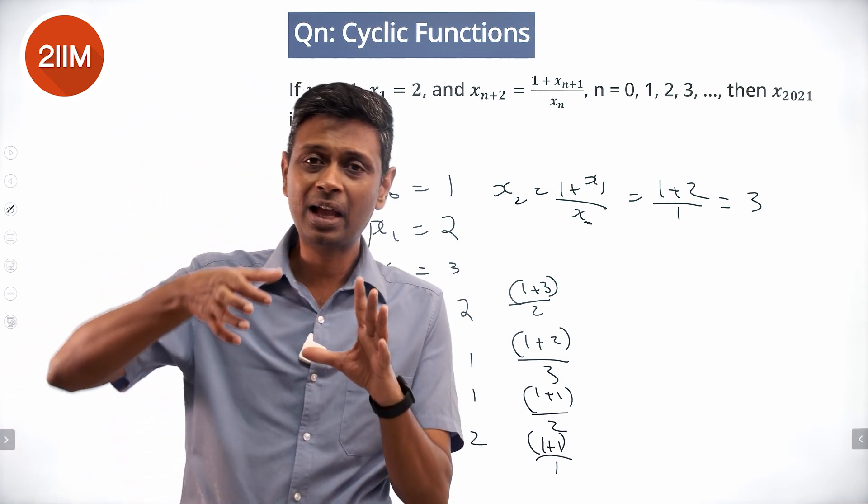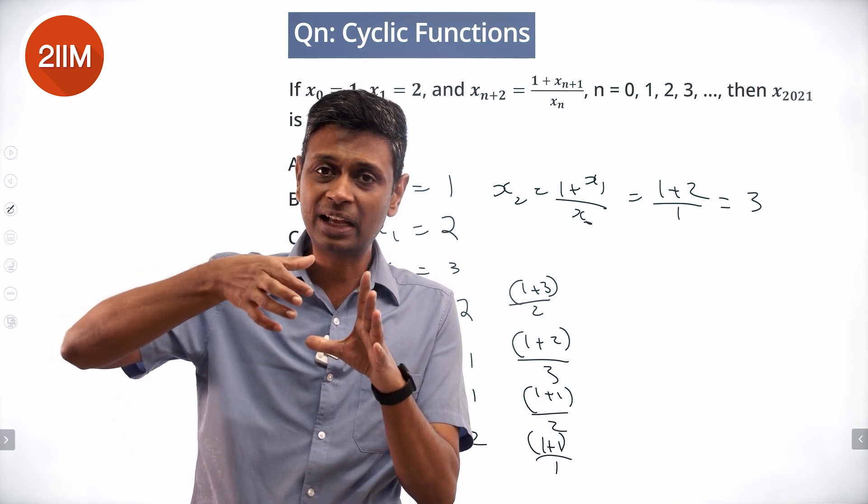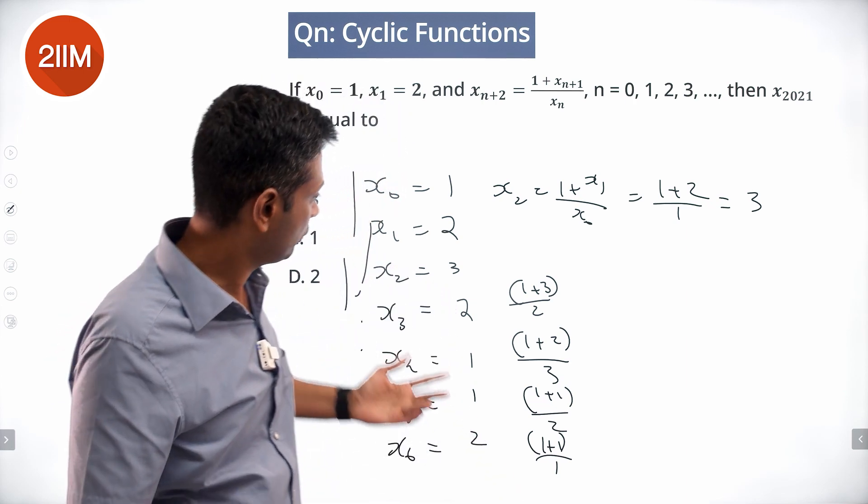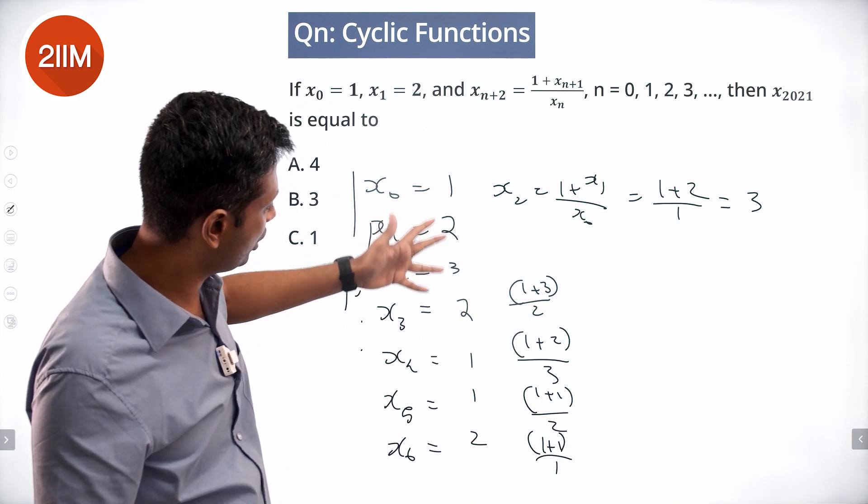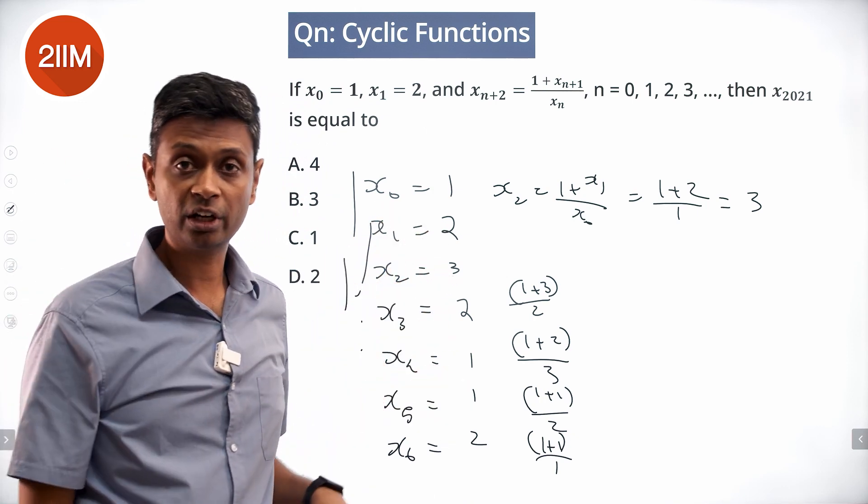The moment a pattern recurs, after that it will become a cycle. So if I see a 2, 3 somewhere, this 2, 3 generates a 2. That 2, 3 will generate a 2, and so on.